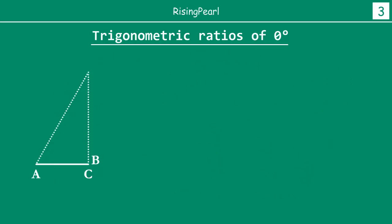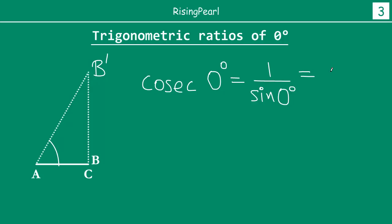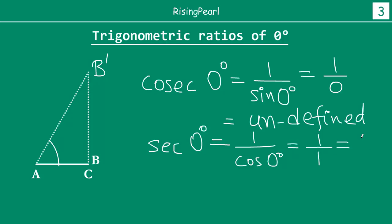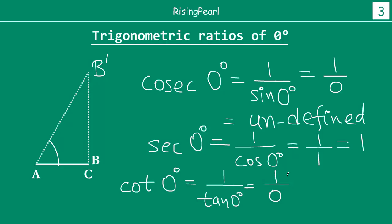Now let's quickly find cosec, sec, and cot. Cosec zero degrees is one divided by sine zero degrees, which is one divided by zero. Whenever we have one divided by zero it is undefined. You cannot divide any number by zero. Sec zero degrees is one divided by cos zero degrees, which is one divided by one, equals one. Finally, cot zero degrees is one divided by tan zero degrees, which is one divided by zero, so it is also undefined.